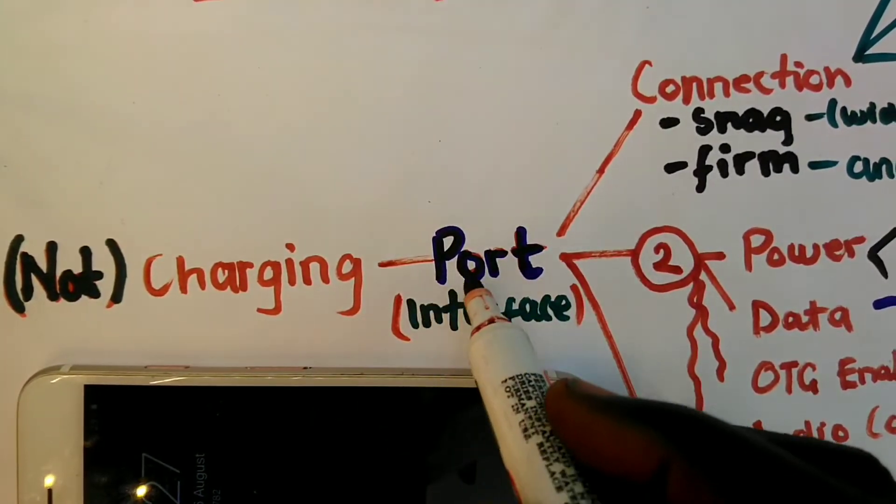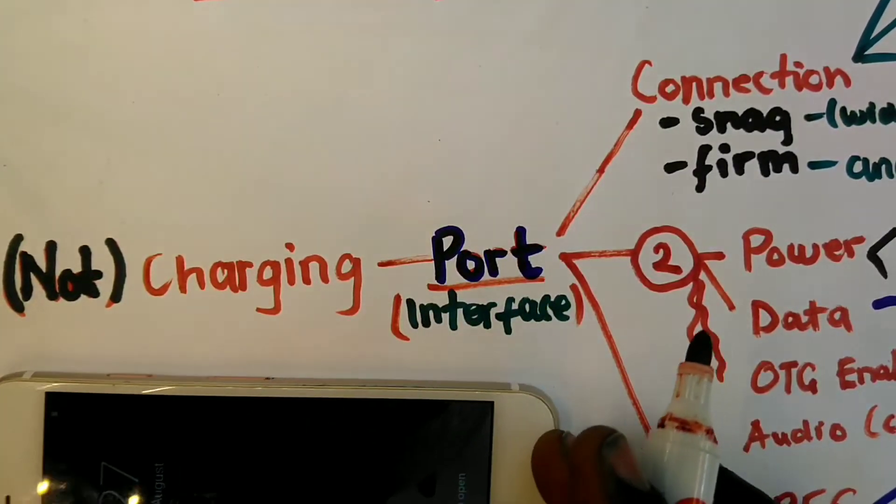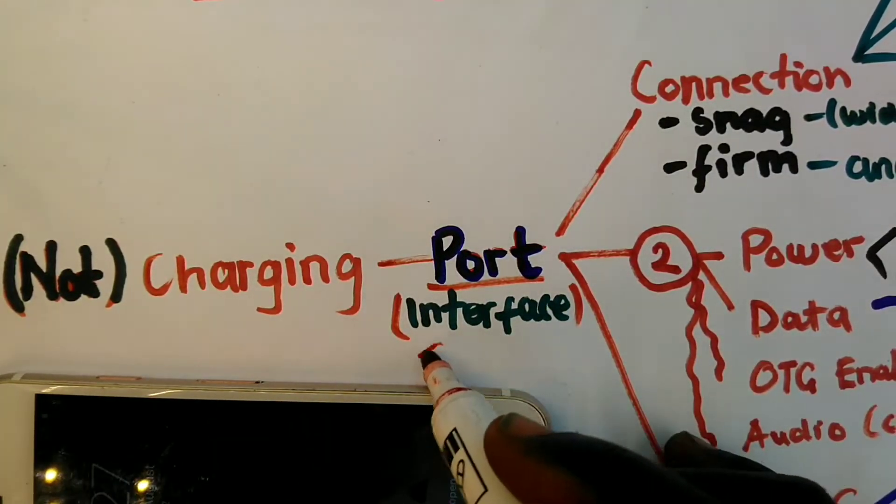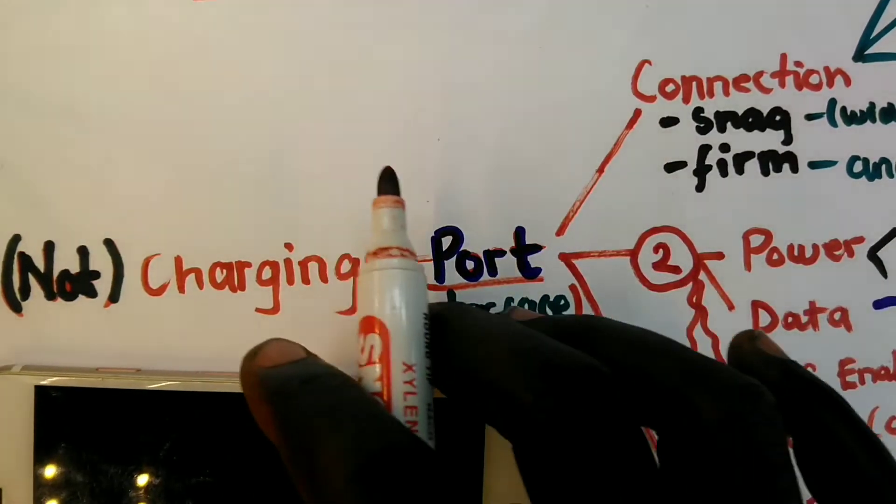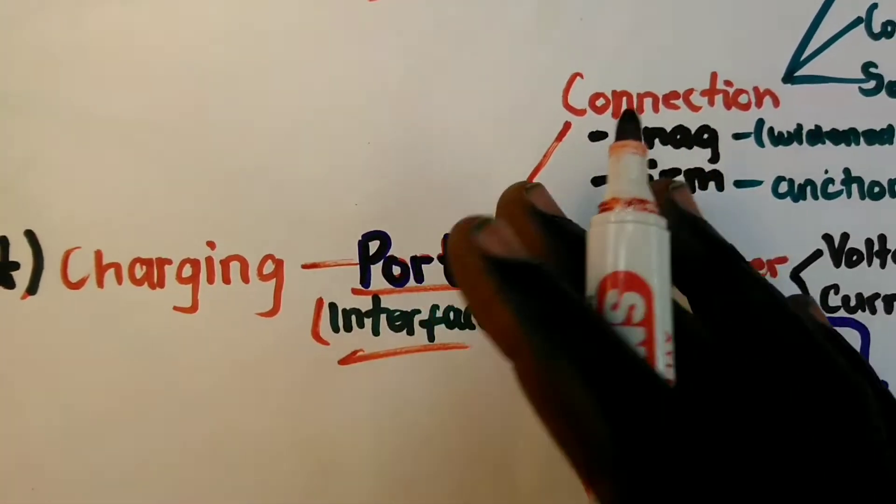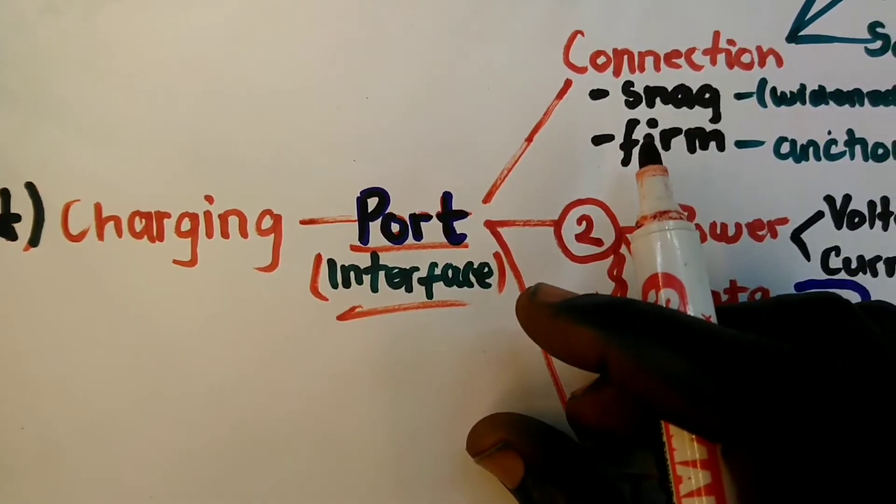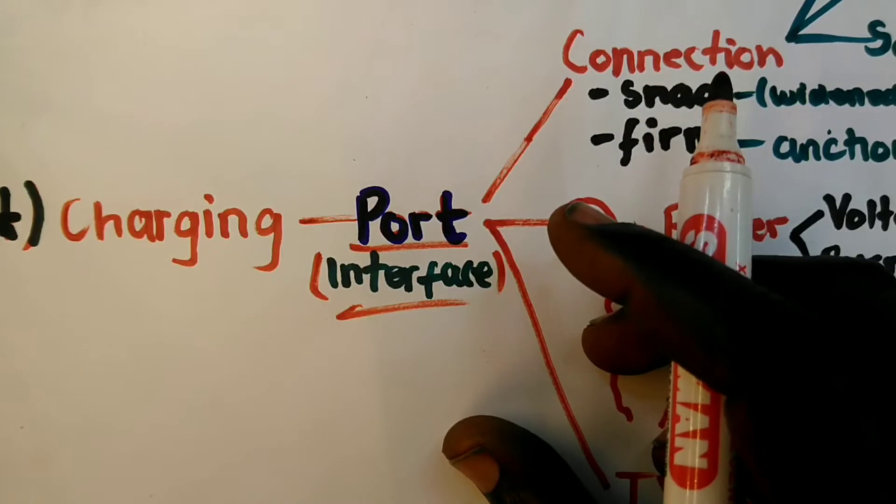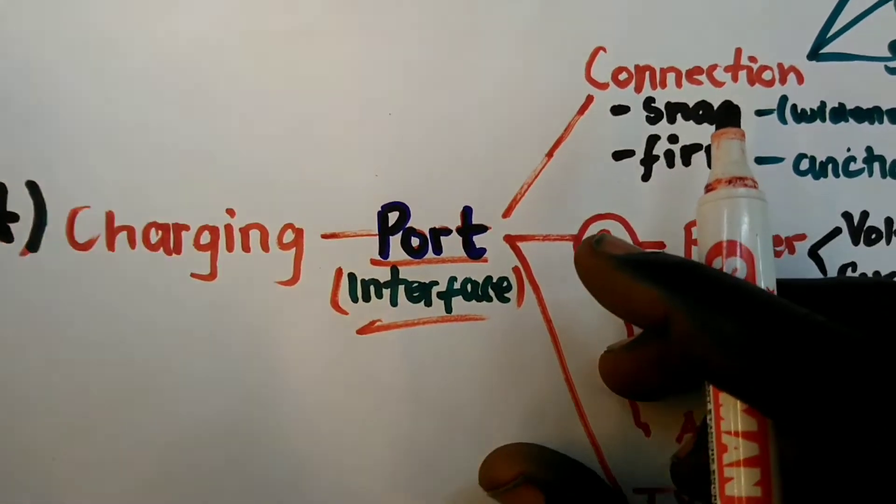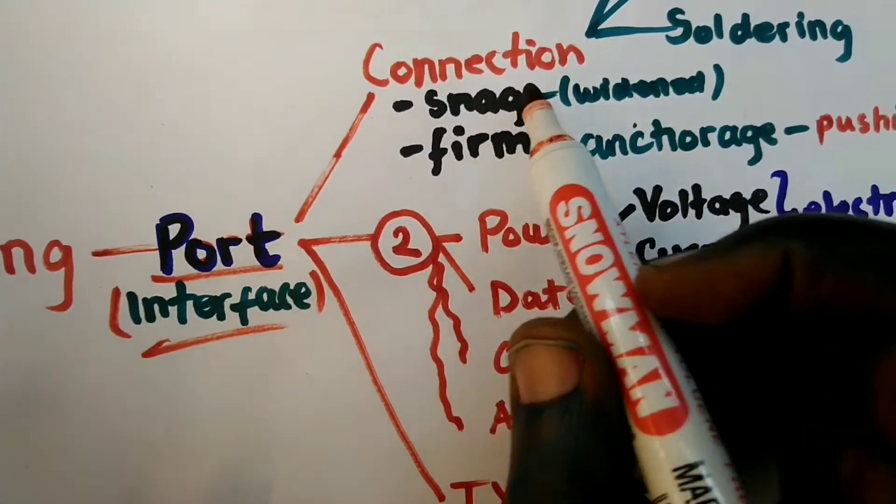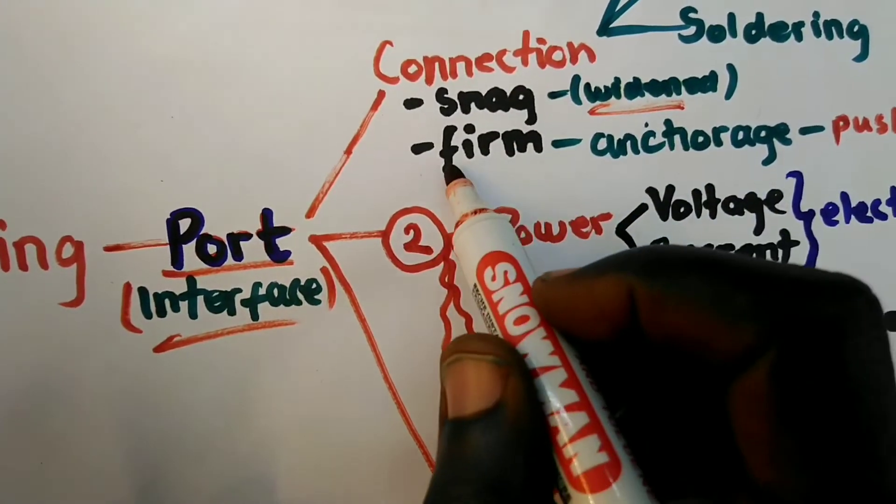So our case was a situation where we had the port failure, and that's basically it is an interface. Now when we actually talk about the port, it is basically a simple connection to allow you to connect your device to power so that you can recharge it. And as such, any connection has to be snug, in other words not widened, and then it has to be firm.